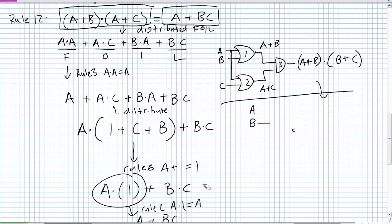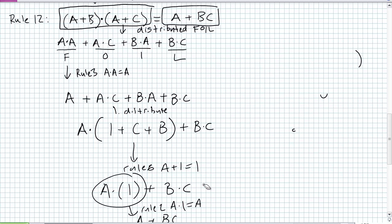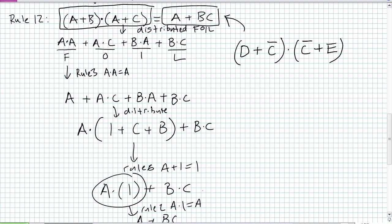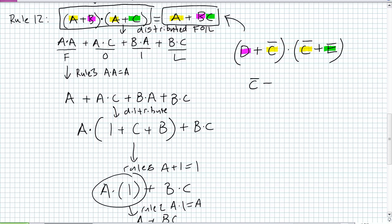For example, D OR NOT C, ANDed with NOT C OR E — does that follow the pattern? The common term is NOT C, the different terms are D and E. Result: NOT C OR (D AND E). You can do the full FOIL derivation, or once you recognize the pattern, just apply the shortcut directly.